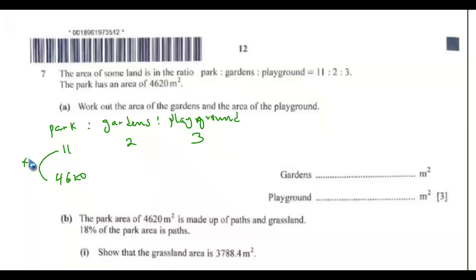So you need to do the same to this. That is times 420. So this is also multiplied by 420. So this will give you 840 and this will give you 1260. So for the garden, we have 840. And for the playground, we have 1260.